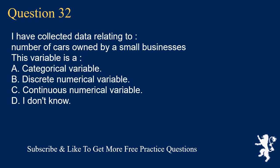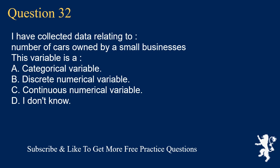Question 32: I have collected data relating to the number of cars owned by a small business. This variable is A. a categorical variable, B. discrete numerical variable, C. continuous numerical variable, D. I don't know. The correct answer is B, discrete numerical variable.